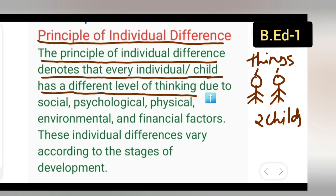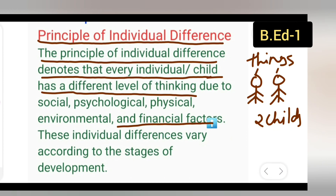Due to social, psychological, and physical environment factors, people differ in their thinking process and in how they live in their environment. They come from different places and depend on their environment. Financial factors also matter — one child may have more money, another may have less or be poor.